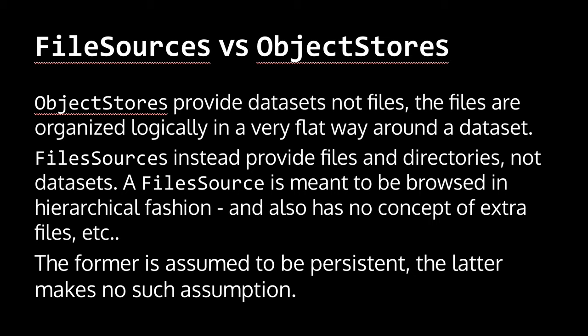A question that might pop up is: what's the difference between file source plugins and object stores? It really comes down to object stores providing datasets, not files — files are organized logically by Galaxy around the concept of a dataset. A file source provides a description of files and directories as we typically think of them, meant to be browsed hierarchically. There's no concept of extra files as in a Galaxy object store, and object stores are assumed to be persistent where file sources don't need to make that assumption.